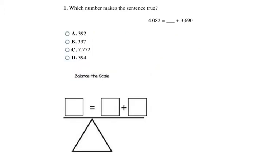Here I have a blank that I need to figure out what number to fill in to keep both sides of the equation equal. Thinking of this as a scale, I have 4082 on the left side and some mystery number plus 3690 on the right side. I need to figure out what this mystery number should be so that when I add 3690, it equals 4082.